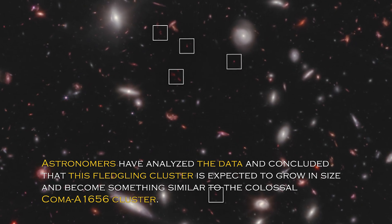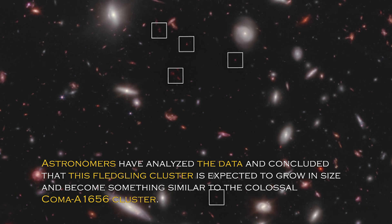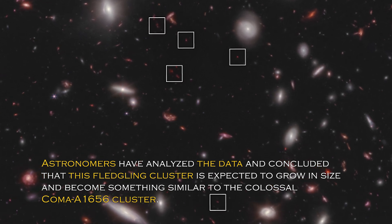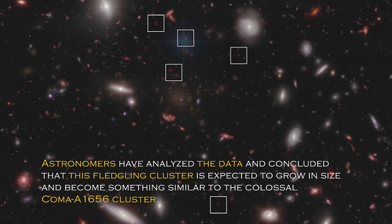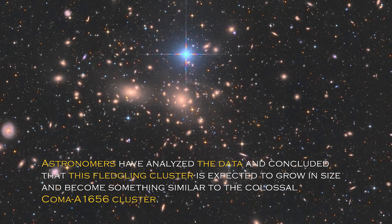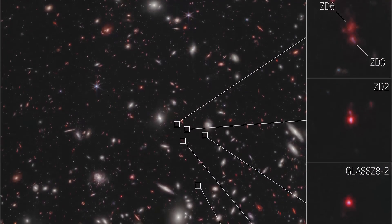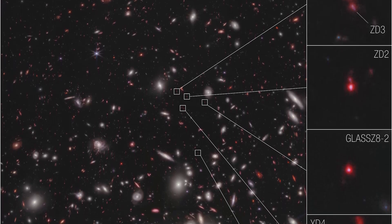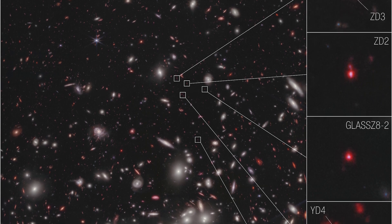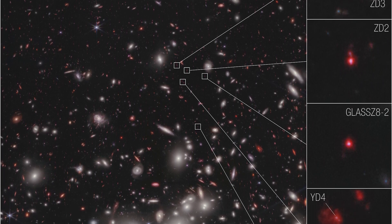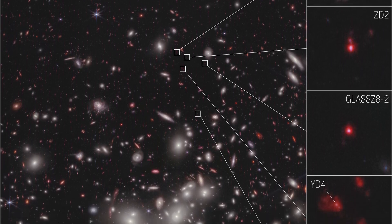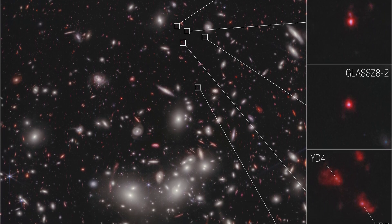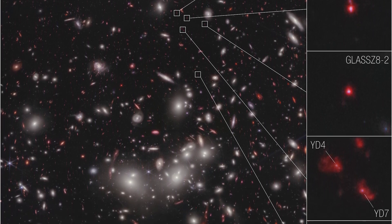Astronomers have analyzed the data and concluded that this fledgling cluster is expected to grow in size and become something similar to the colossal Coma cluster A1656. The place where all this is taking place is unique and special, as it is in an area of accelerating galactic evolution thanks to the James Webb Space Telescope. Now researchers can measure the velocities of these seven galaxies, which gives them the confidence to confirm that they are bounded together in a protocluster.